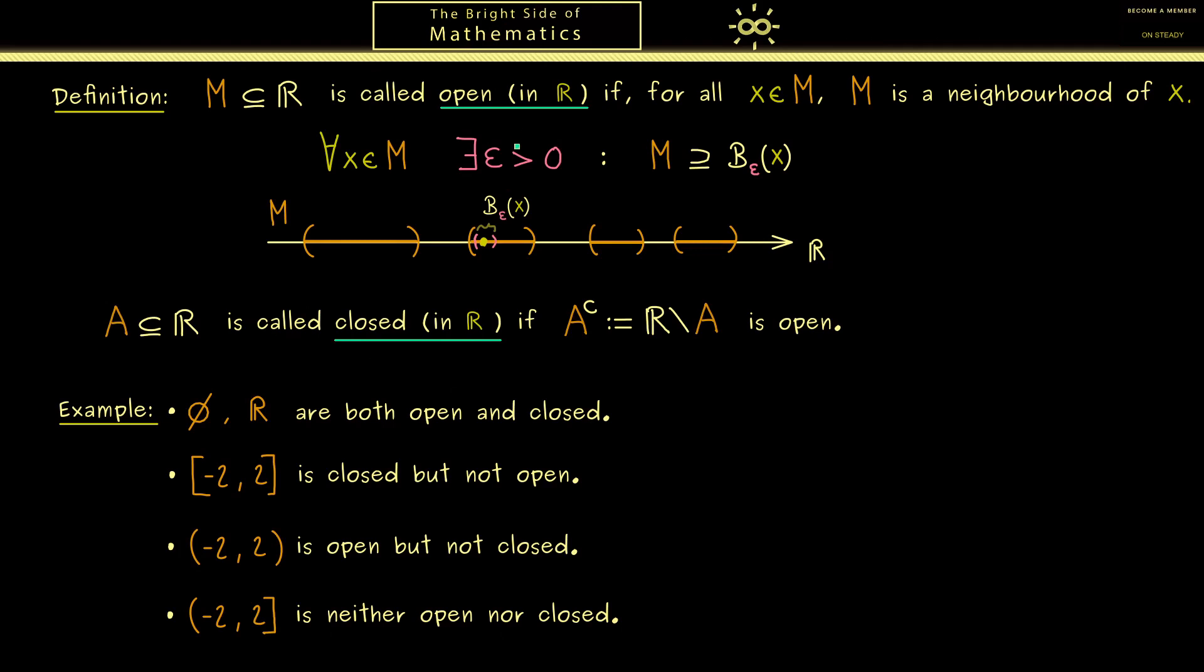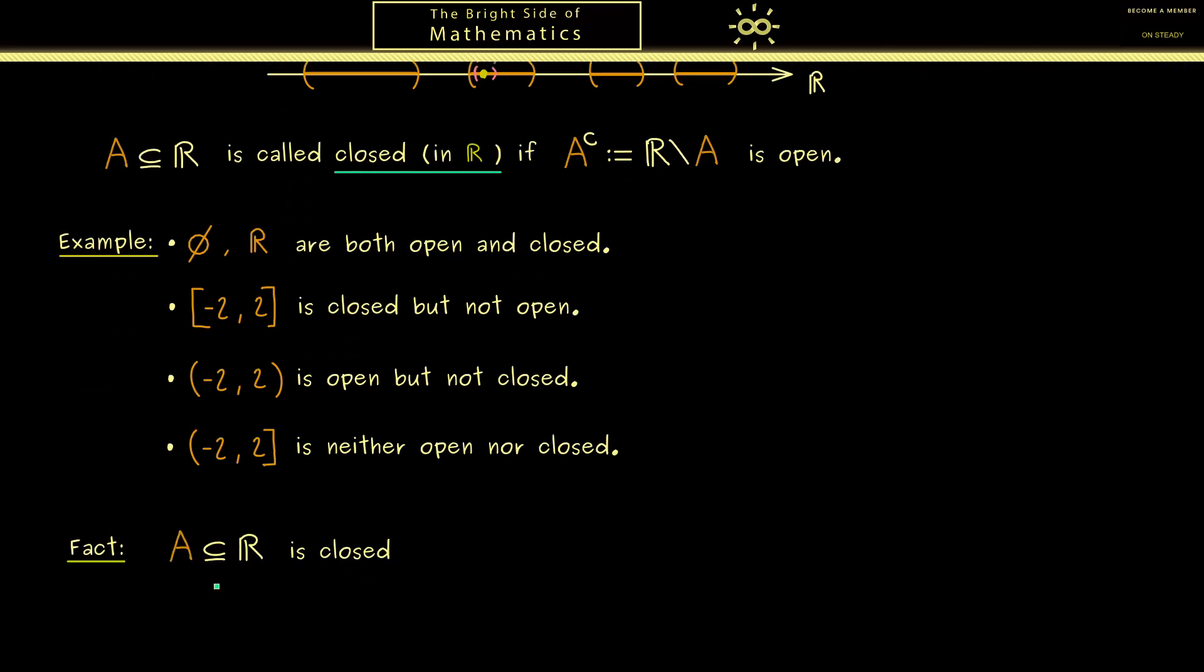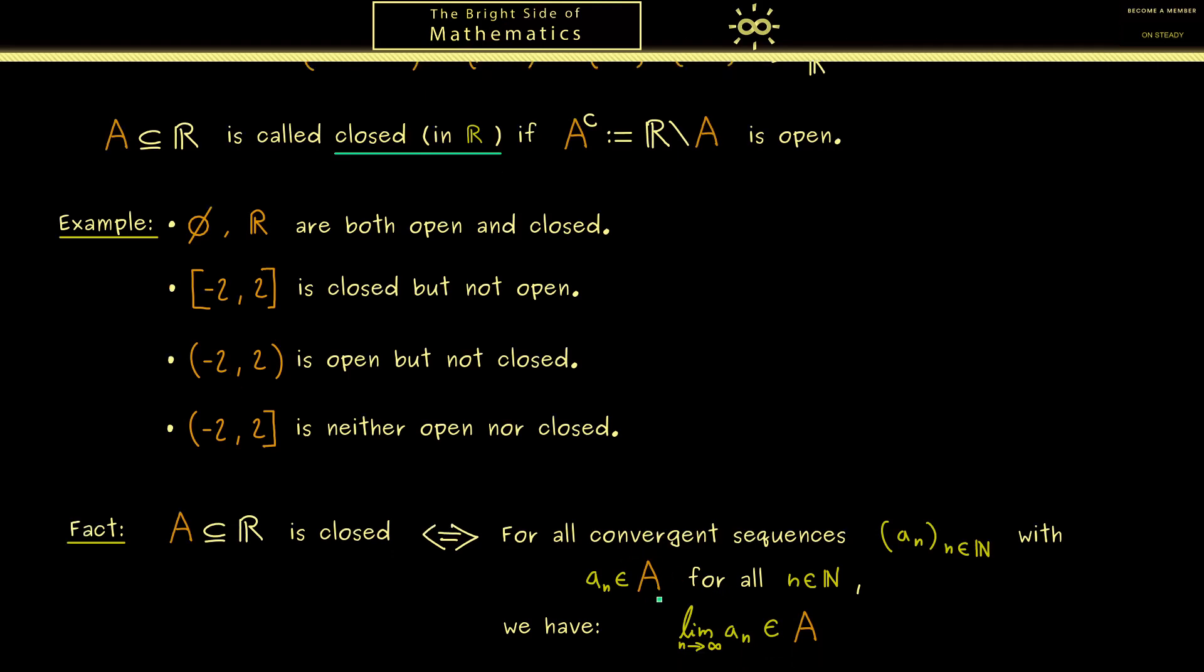So you see these two definitions here are not so complicated at all. But please keep in mind a subset of the real numbers could be much more complicated than just an interval. In order to deal with such sets the next fact is very helpful. It gives us a criterion to check closeness with the help of sequences. Namely a set A is closed if and only if for all convergent sequences a_n with the property that all the sequence members lie inside set A, we have that the limit lies also in A. To put this in other words, it's not possible to leave the set with sequences from the inside.